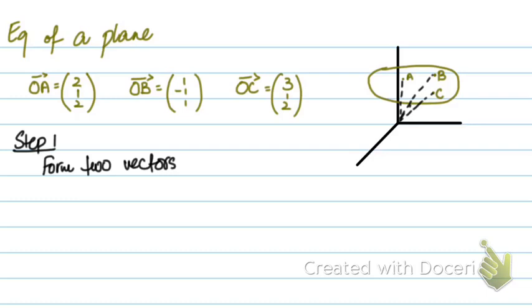Step 1, you form 2 vectors and these vectors are not supposed to be parallel vectors, they are supposed to be non-parallel vectors. So, I'll form AB.